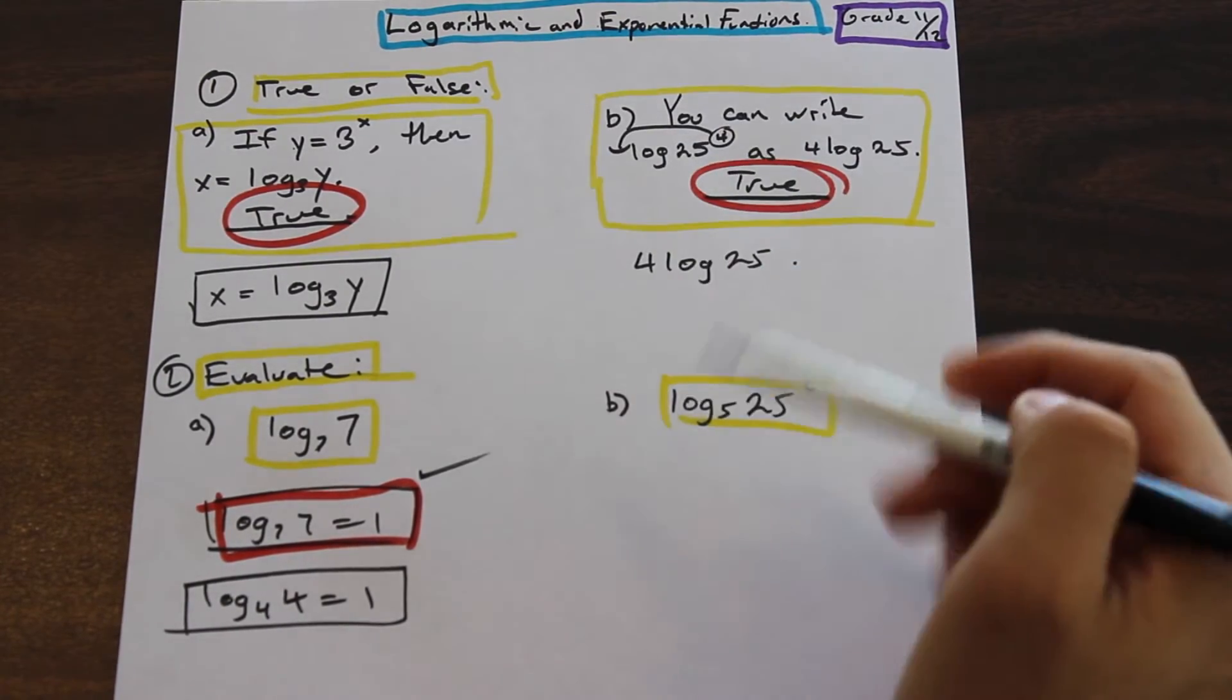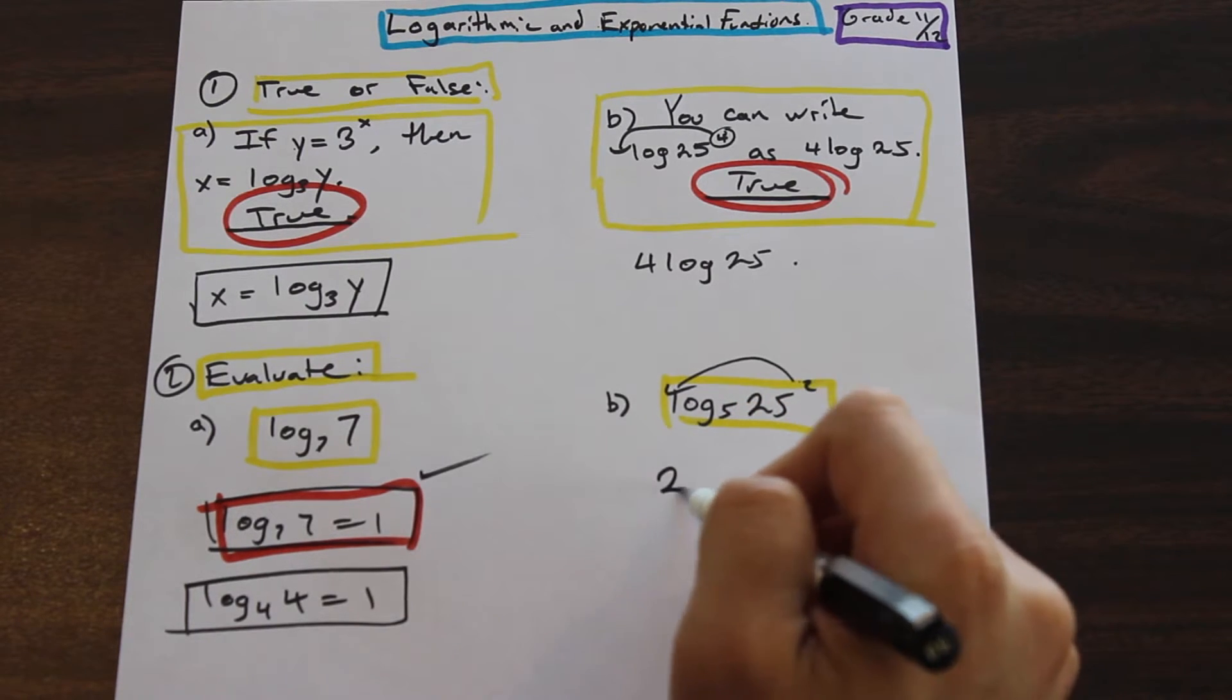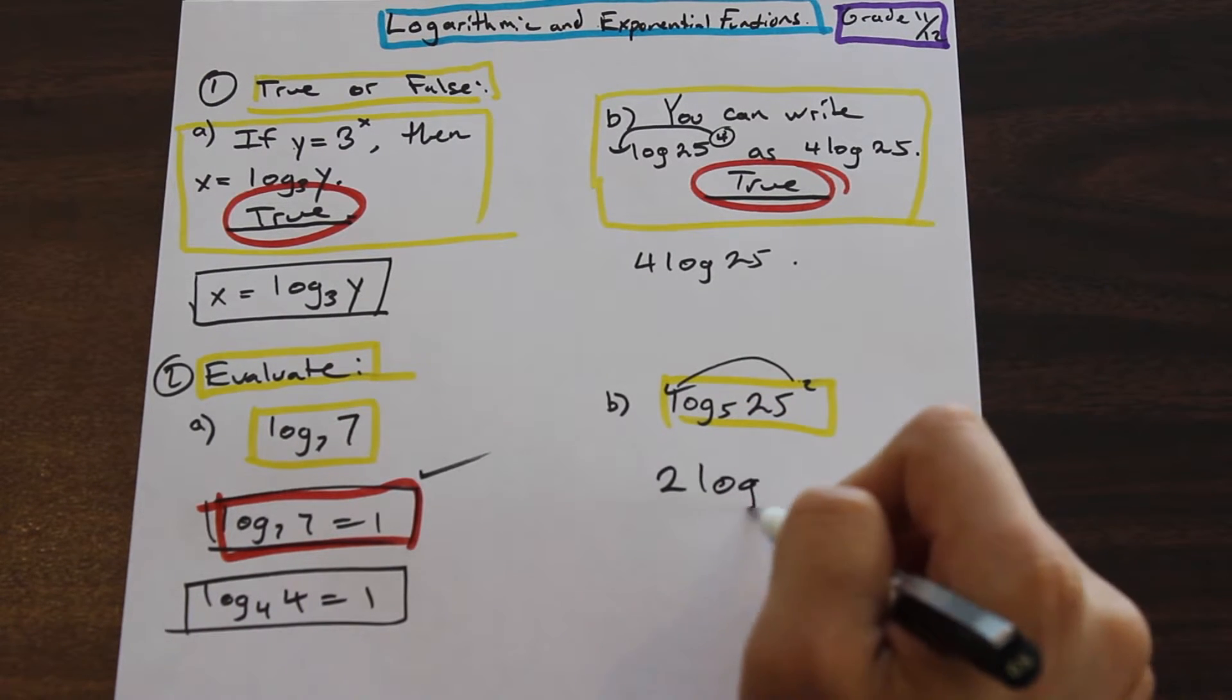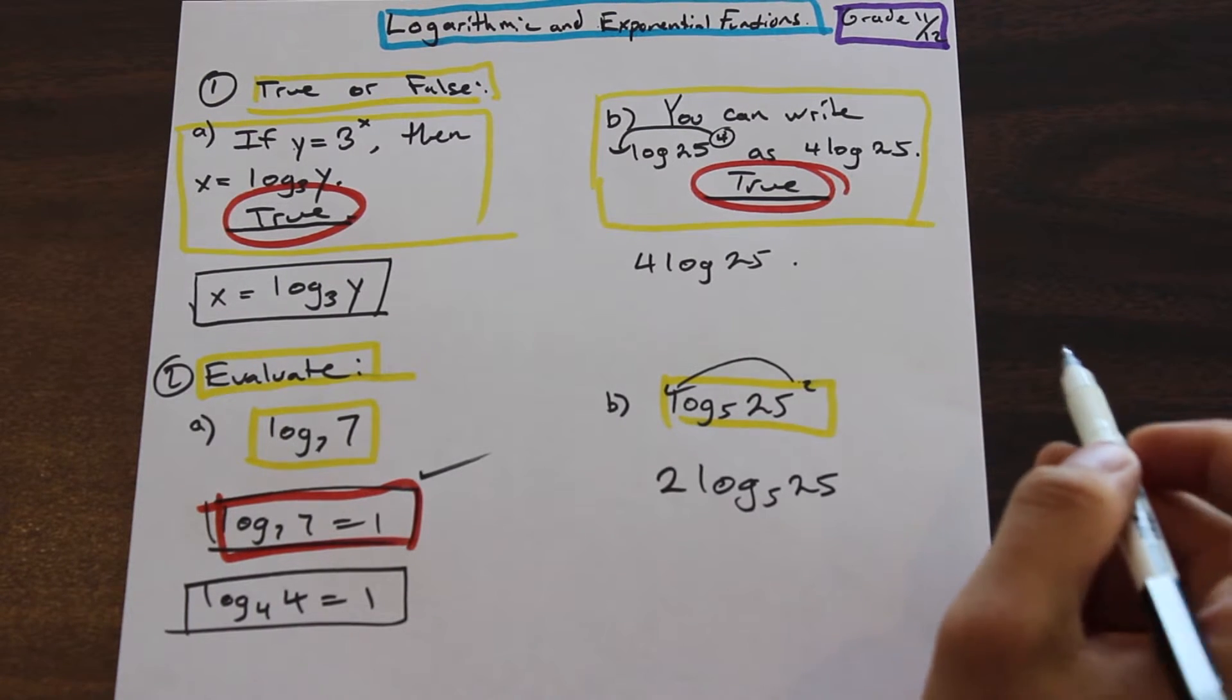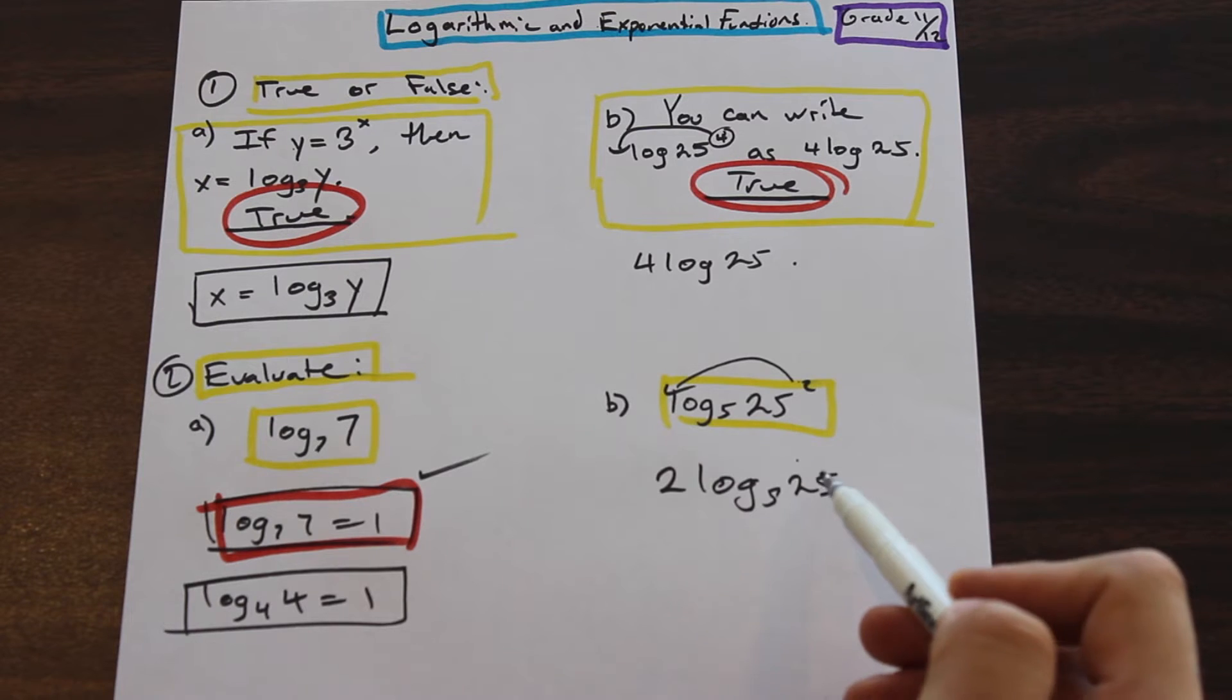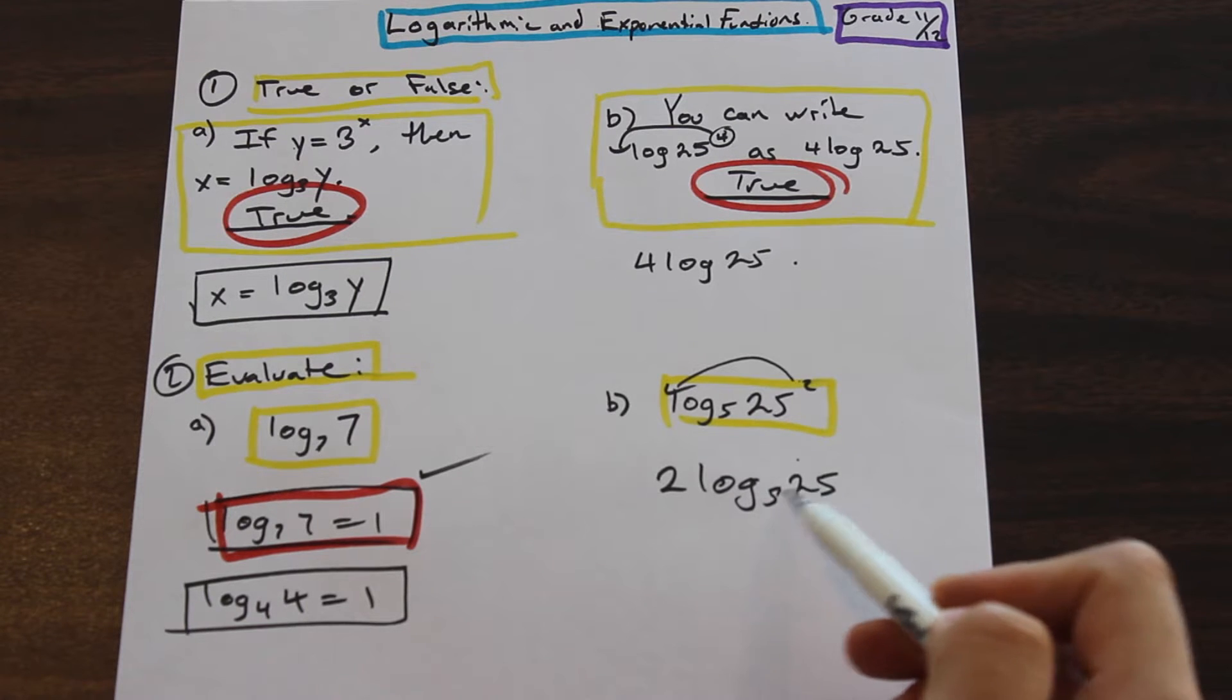So let's use this rule that we learned, where we can take the power and move it down. Let's start with that. So let's take this two, let's move it down to the front. So we have two log base five 25, right? And like I said before, what we're trying to accomplish here is we're trying to have the base, log base five, and we're trying to have the argument of the log as the same number.